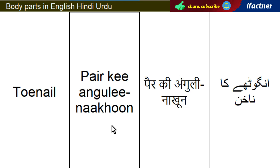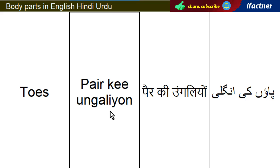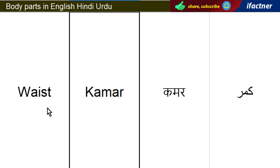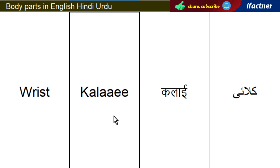Pair kay ongli waala nakhun — Toenail. Pair ki ongliaan — Toes. Zubaan — Tongue. Kamar — Waist. Kalai — Wrist.